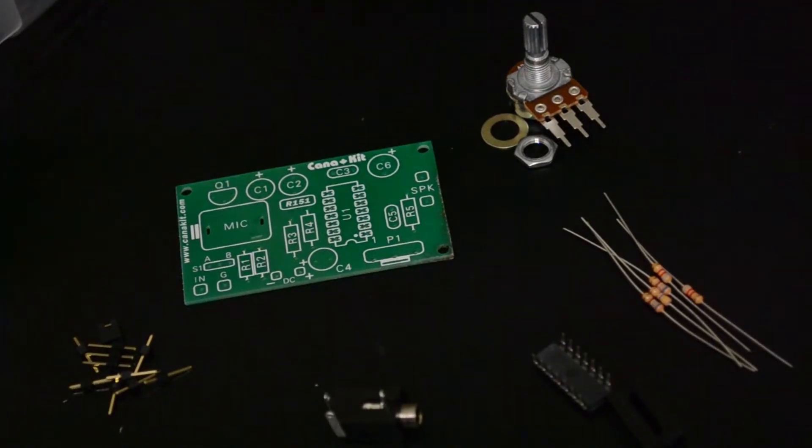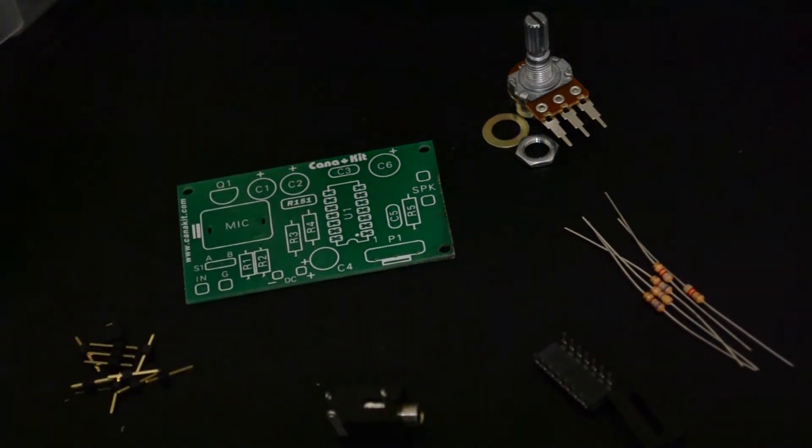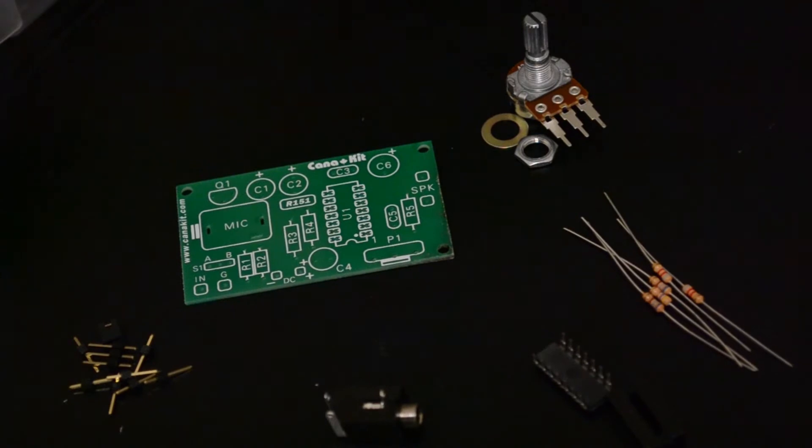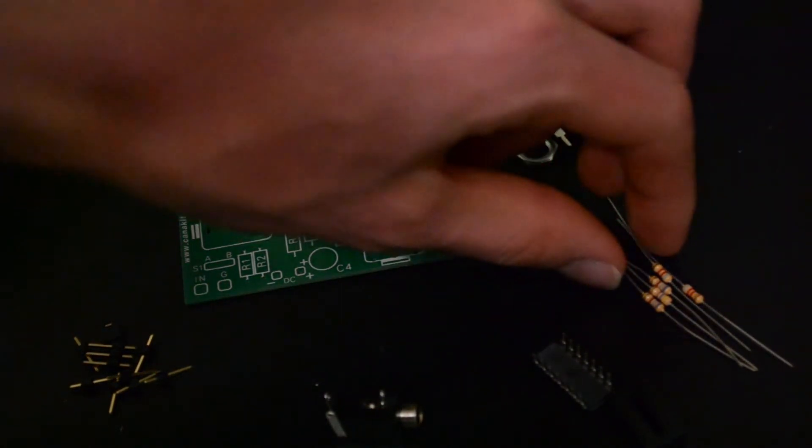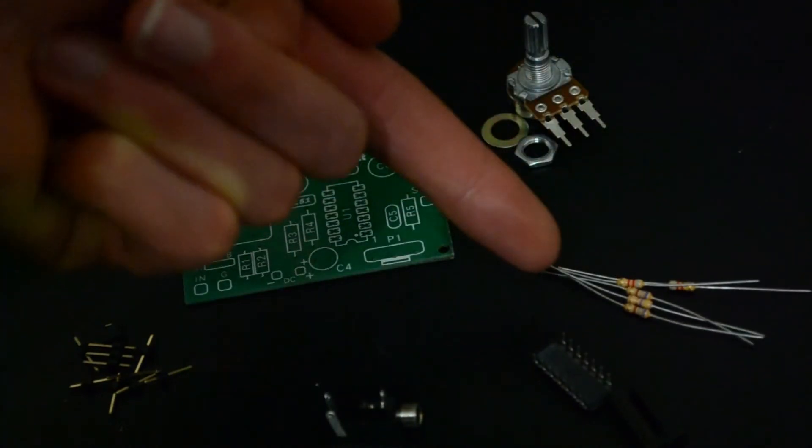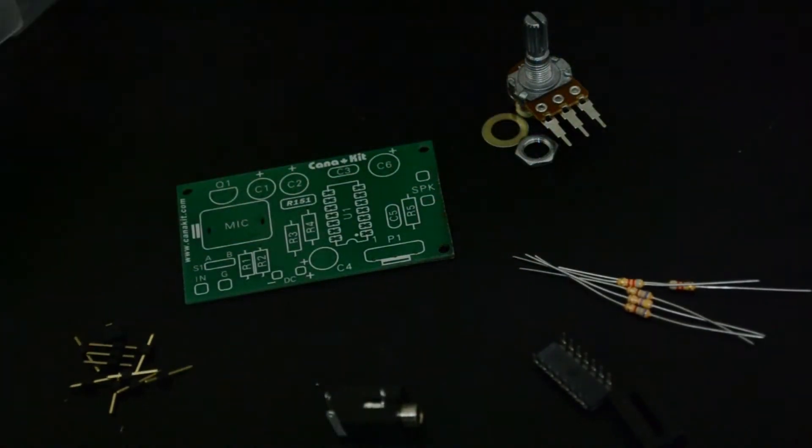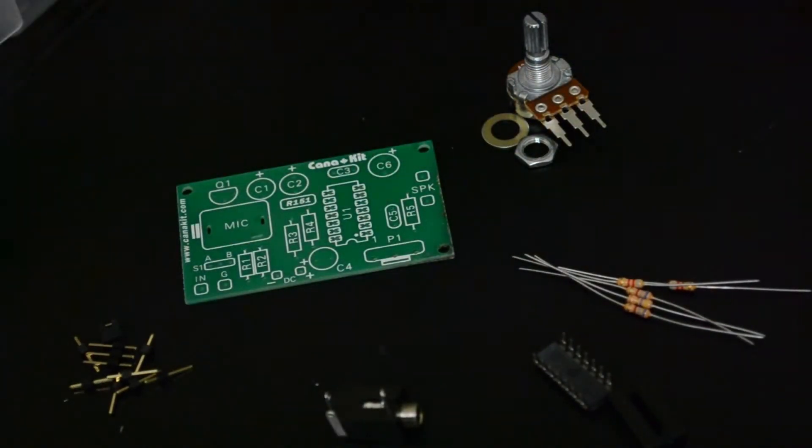All right, we've got all the pieces separated out now into the different components. And now, what we'll do is start with the resistors, because they're probably the smallest component we're going to run into. Now, because they're all sorts of different values, if you remember, there's that lovely color coding. So, we will use that to identify them. That's where the instructions come in handy.